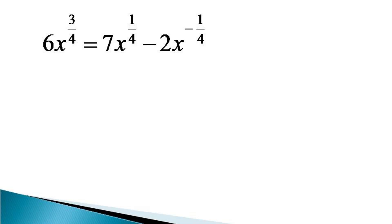To solve this equation, first we notice that there is a negative power on the right hand side, that is minus 1 by 4. To remove this negative power, we multiply the whole equation by x raised to the power plus 1 by 4.